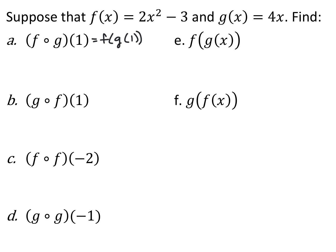We always evaluate composite functions from the inside out. The first part is telling us we want to do g of 1. So I take g of x and plug in 1. g of x equals 4x, so g of 1 equals 4.